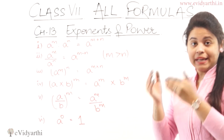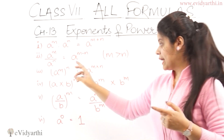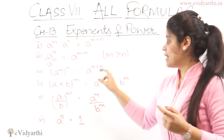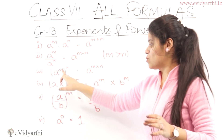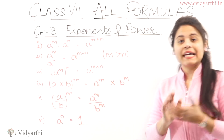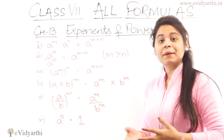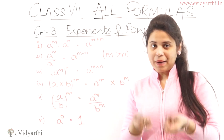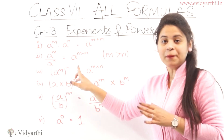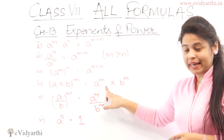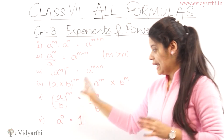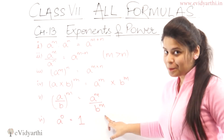The third law is power of a power: a raised to the power m, raised to the power n — here you have two different powers and you multiply them, so it equals a raised to the power m×n. The fourth law: (a × b) raised to the power m equals a raised to the power m into b raised to the power m. The fifth law: (a ÷ b) raised to the power m equals a raised to the power m upon b raised to the power m.